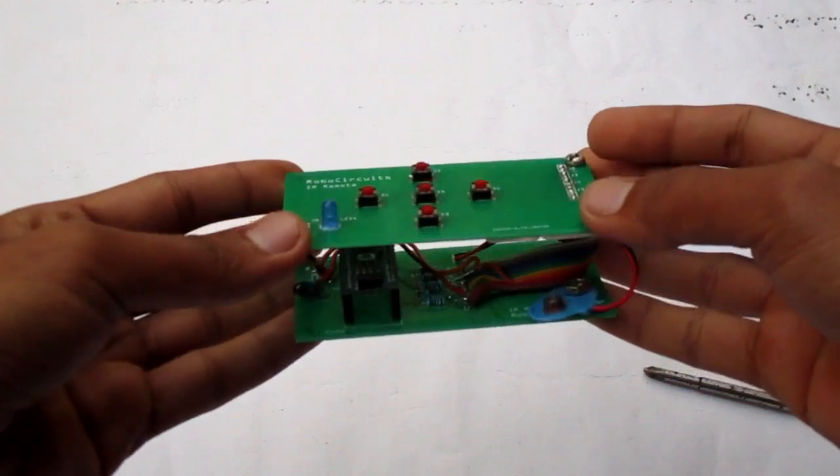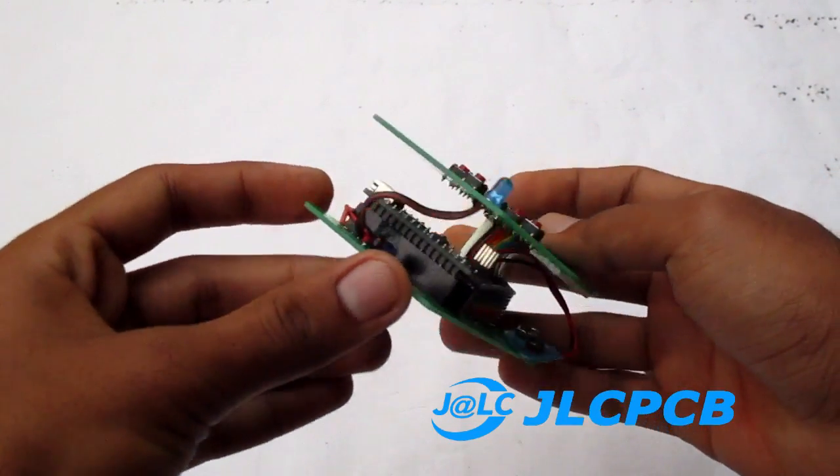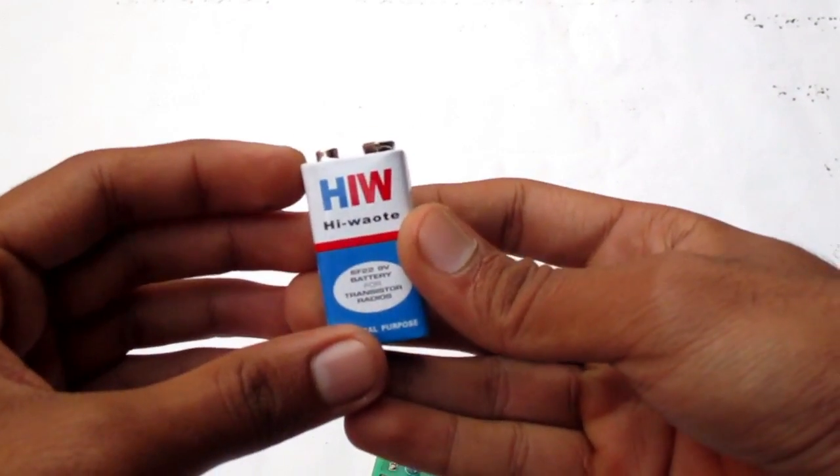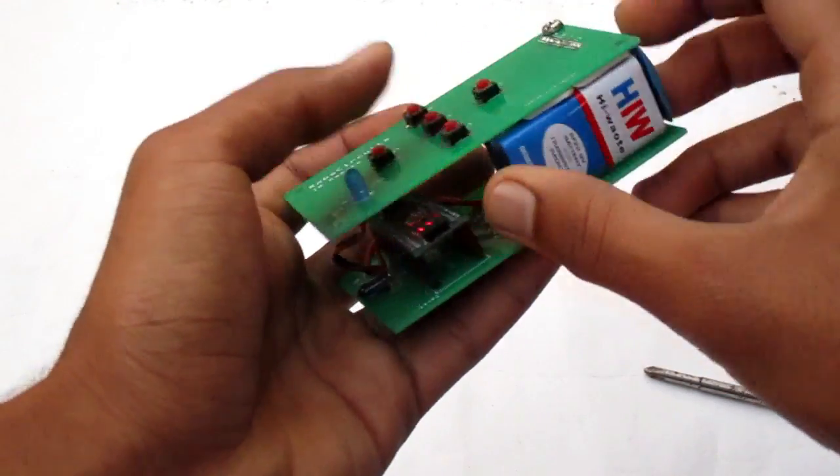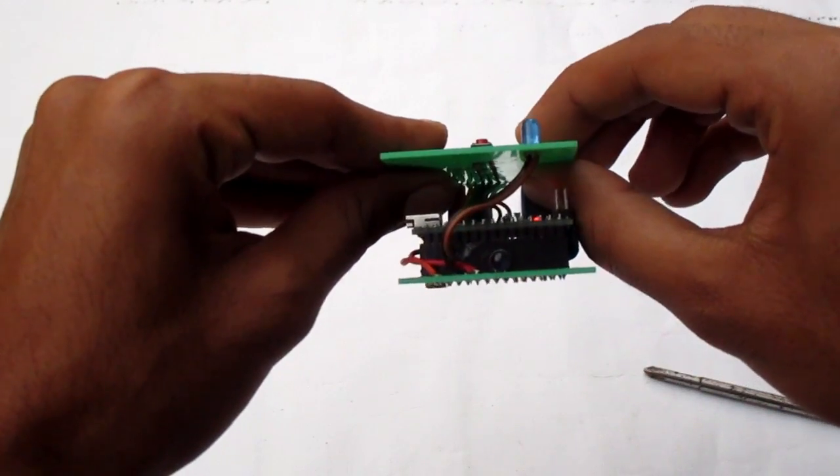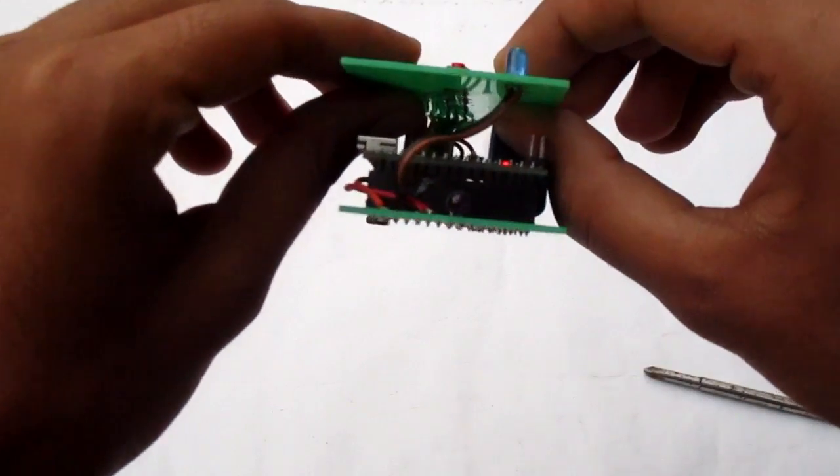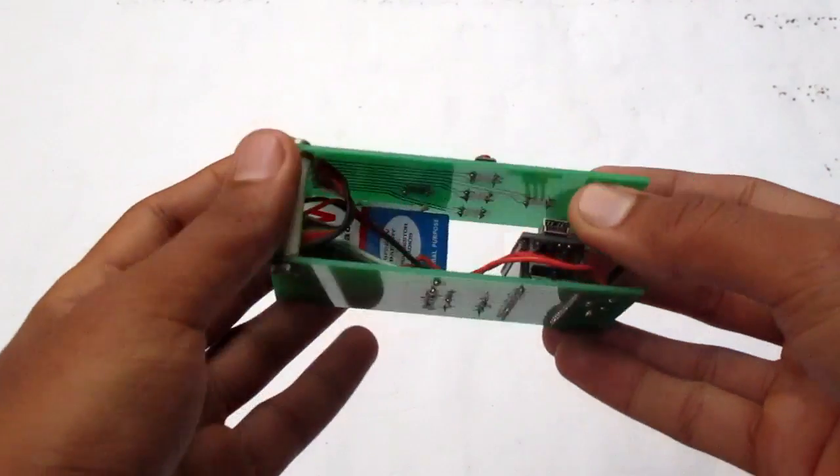Now take a 9 volt battery, stick it inside the two PCBs using double-sided tape. Now connect the battery connector and try pressing any button to check whether it's working or not. So it's working. Now our remote is completed. Let's move on to the car.